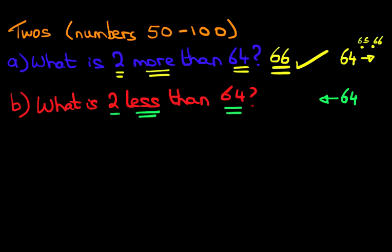How much are we going to count back? We are going to count back by 2. So we are going to count backwards from 64. Let's do that now — 64, 63, 62. And that is our answer: 62.